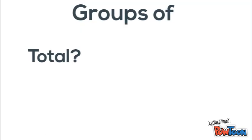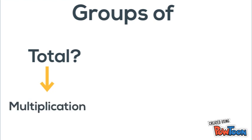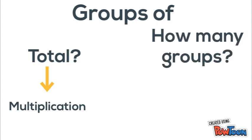So groups of questions are what we're focusing on today. Whenever you're asked to find the total from a given number of groups and the group size, you know it's multiplication. And whenever you're asked to find the number of groups when given a total, you know it's division.